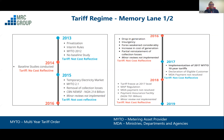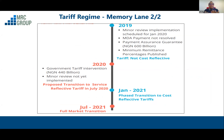In 2019, the same issue arose. Again, there was a tariff shortfall because the government decided that customers should not be paying cost-reflective tariffs — only the regulator-allowed tariffs. They approved 600 billion Naira, which again went into addressing the shortfall that customers were not allowed to pay, and the government took up that responsibility.